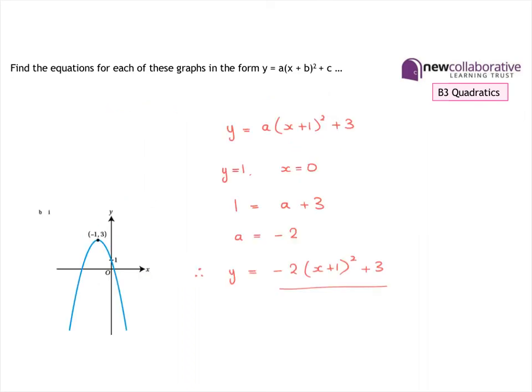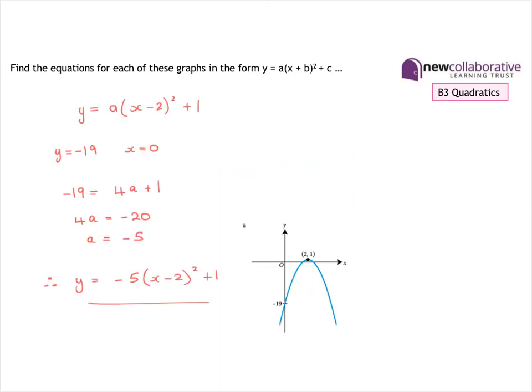For the third question, the correct answer is y = -2(x + 1)² + 3. And for the final question, the solution is y = -5(x - 2)² + 1.